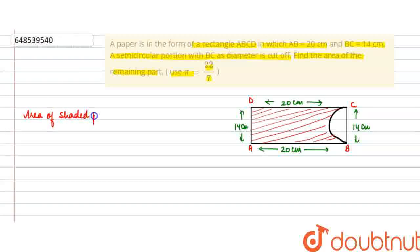Area of shaded portion will be equals to area of rectangle minus area of semi-circle.